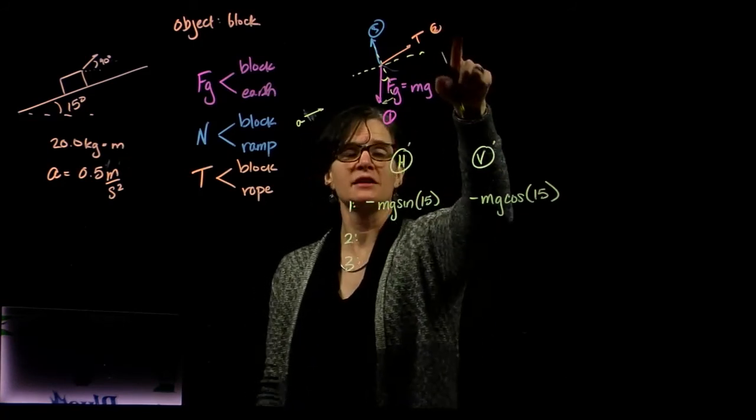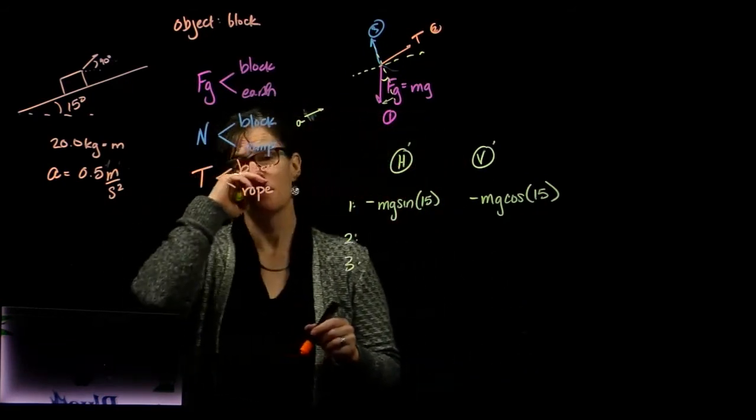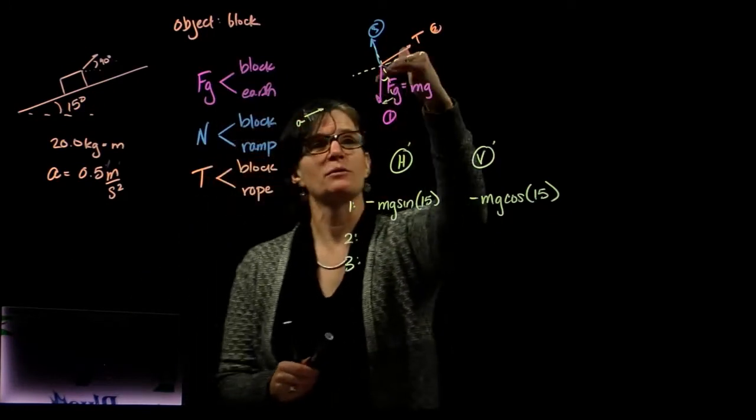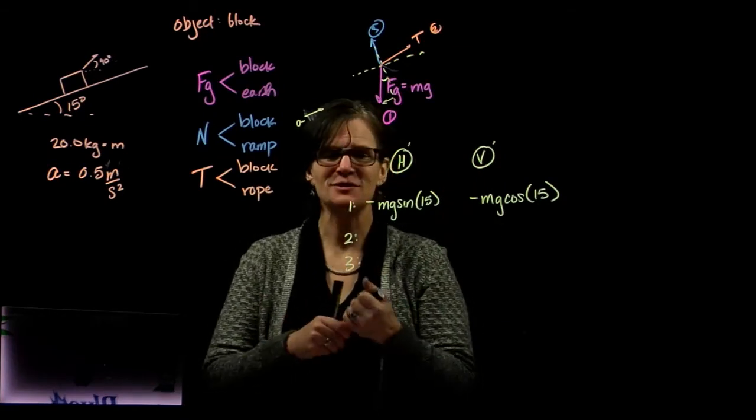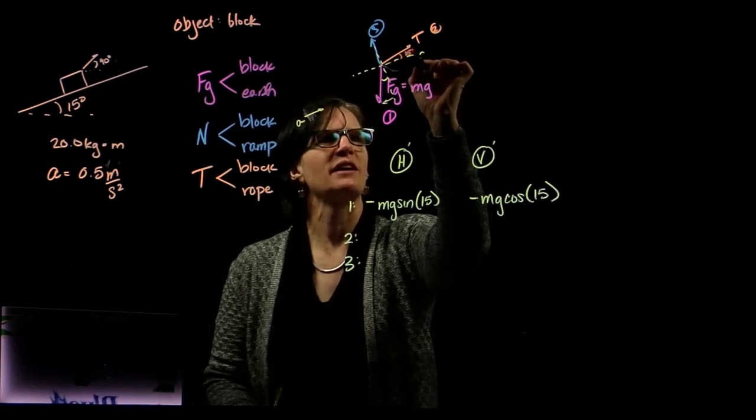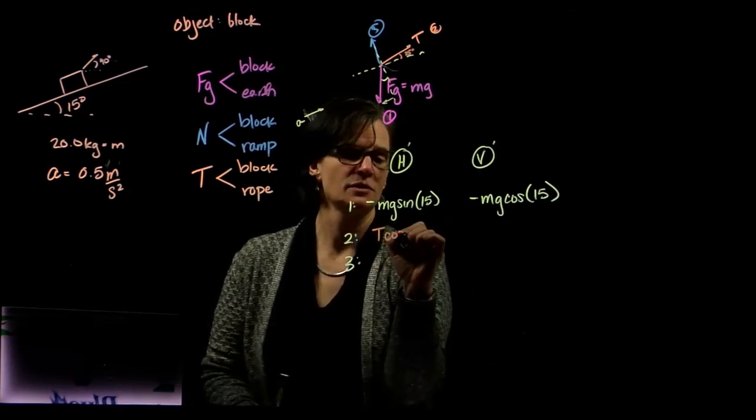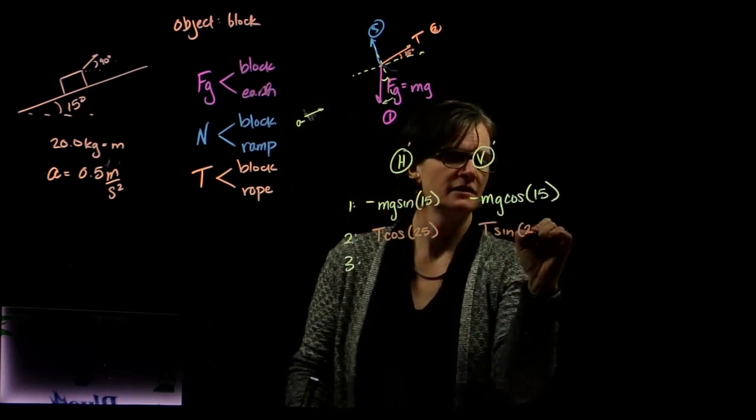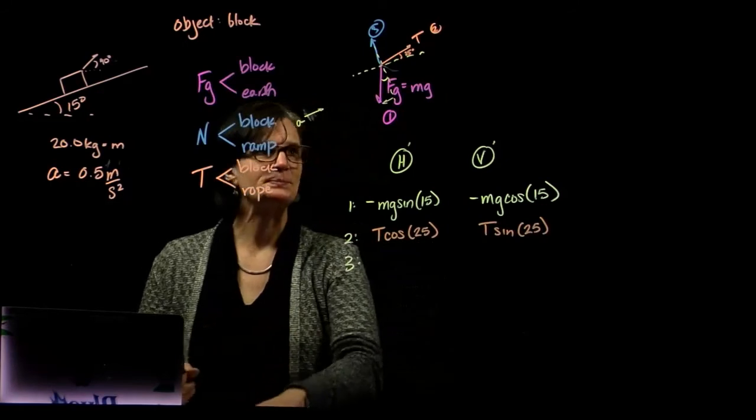Force number 2, that's our tension. The problem tells us that the tension is 40 degrees with respect to the horizontal, and we've now shifted our coordinate system by 15 degrees. So we're looking at 25 degrees with respect to the new coordinate system. We have positive to the right, T times the cosine of 25, and it's pointing up T sine of 25.